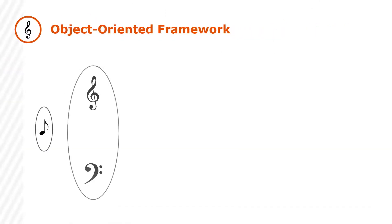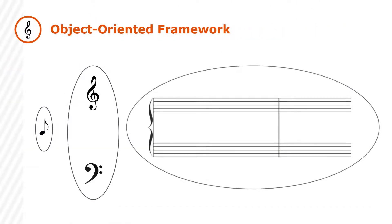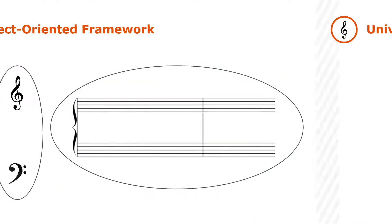Music AI is an object-oriented framework written in Python. Each element of music notation is encapsulated into distinct fundamental components, such as pitches, notes, staves, clefs, and part systems.